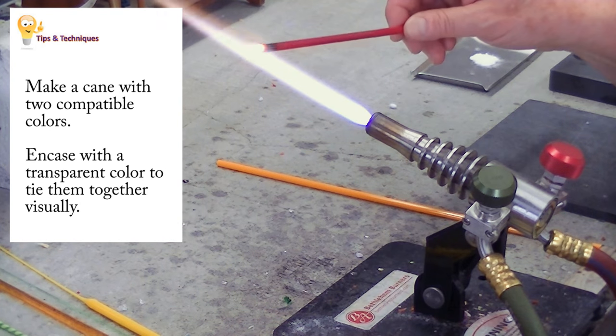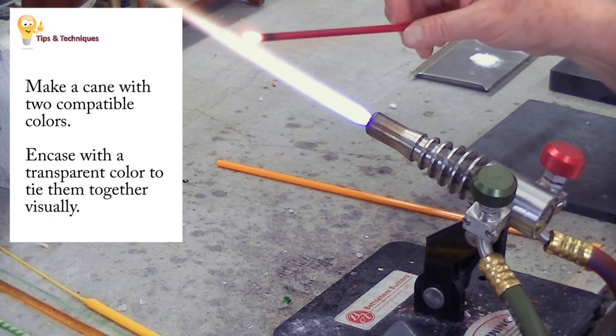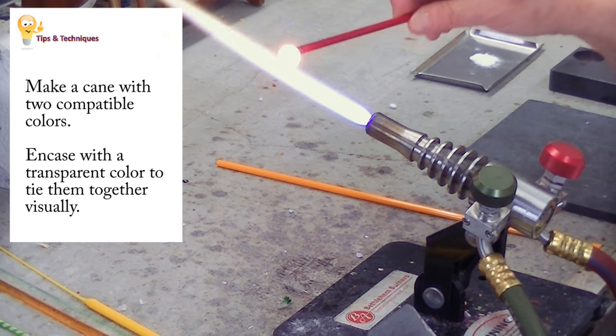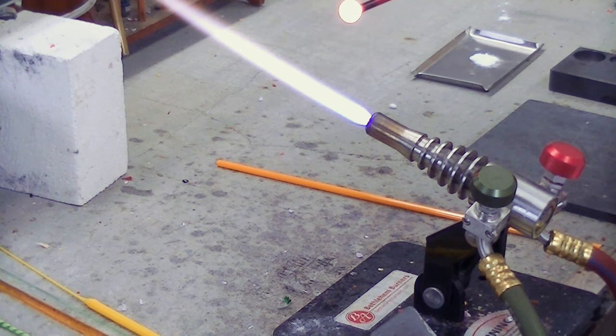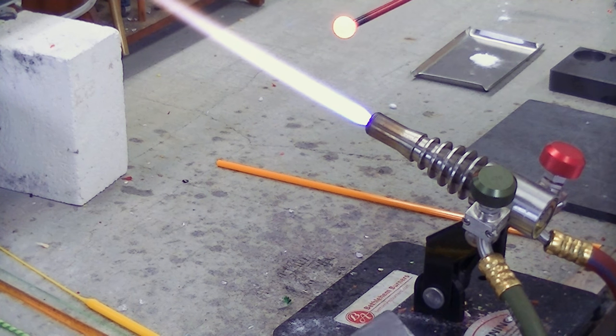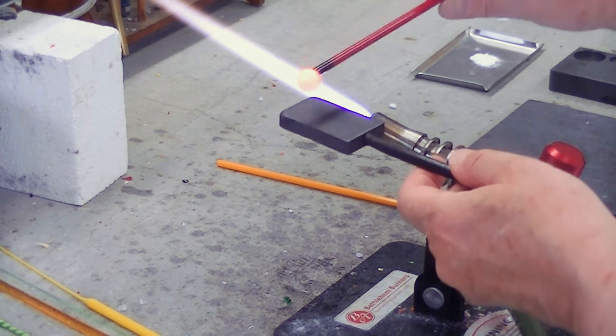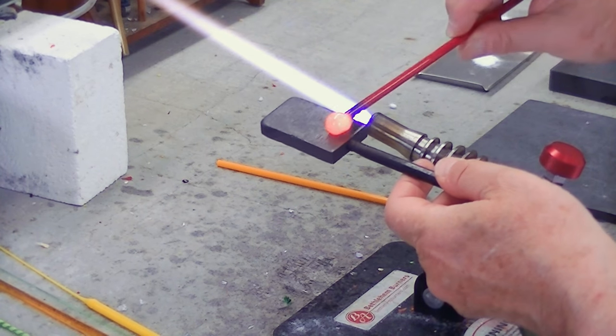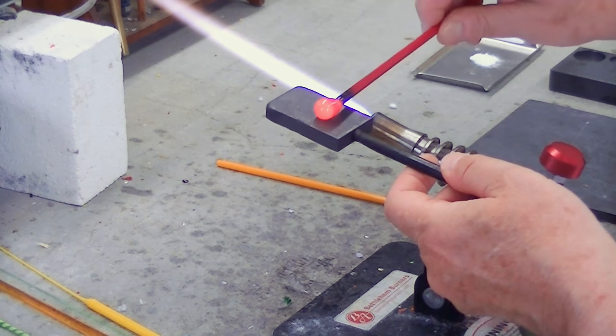Now we're going to make the cane that we're going to be using for our petals. For the purpose of demonstration, I've chosen two pretty strong colors: medium red and dark yellow, encased with topaz. I suggest you try some color combinations yourself.